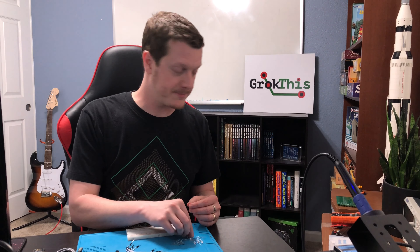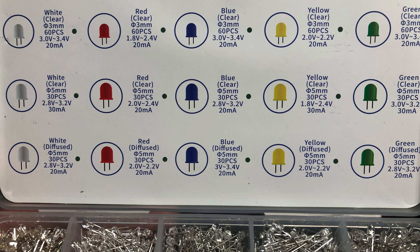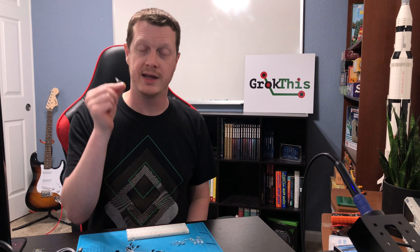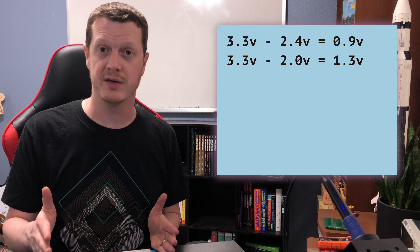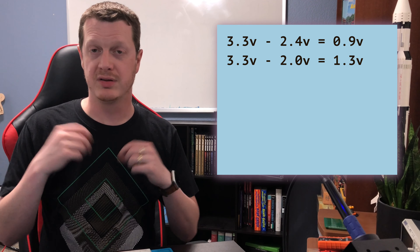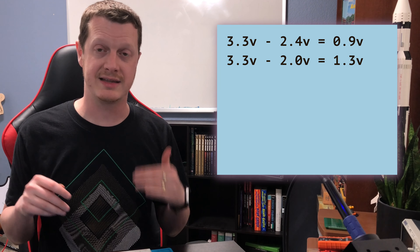So what we're going to do is look at our LED kit. You may have a different LED kit, but every LED should come with a specification for the voltage drop and the current. These are 2.0 to 2.4 volts at 20 milliamps, and that is the critical information we need to figure out what size resistor we need to drop the voltage from 3.3 down to between 2.0 and 2.4.